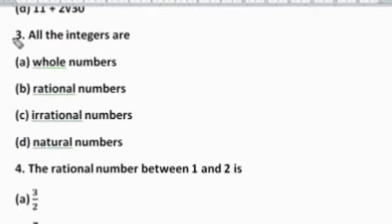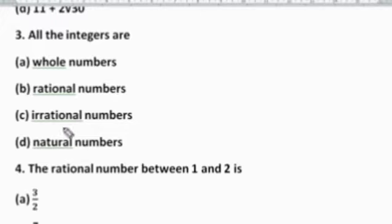Now let's move to the third question. The question is: All the integers are — Option A: whole numbers, Option B: rational numbers, Option C: irrational numbers, and Option D: natural numbers.